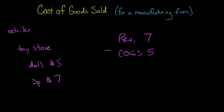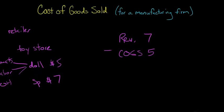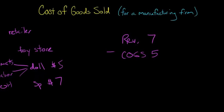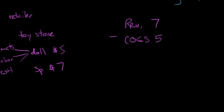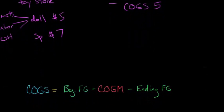That's intuitive for a retailer, but for a manufacturing firm, we actually built the doll. We're thinking about what materials went into this doll, how much labor went into the doll, overhead, all these different things. It's not as simple as just saying what did it cost to buy this doll. So it's more complicated to compute cost of goods sold for a manufacturing firm.